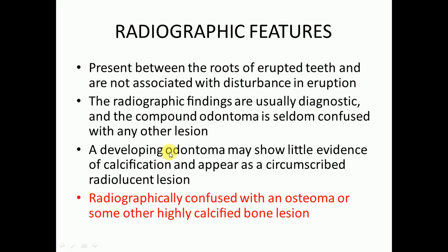Odontomas may be present between the roots of erupted teeth and are not associated with disturbance in eruption. The radiographic findings are usually diagnostic, and compound odontoma is seldom confused with any other lesion. A developing odontoma may show little evidence of calcification and appear as a circumscribed radiolucent lesion, which can be radiographically confused with an osteoma or some other highly calcified bone lesion.